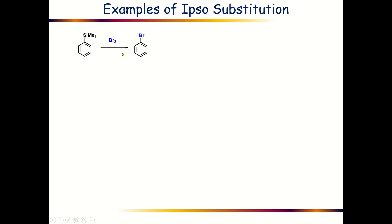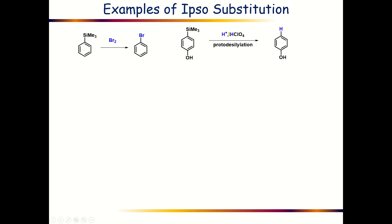Another example is the proto-desilylation reaction. When this trimethylsilyl benzene compound is additionally functionalized with one OH group in the para position, then via treatment with H+, this SiMe3 group can be substituted by H+ — and obviously this is an ipso substitution reaction.